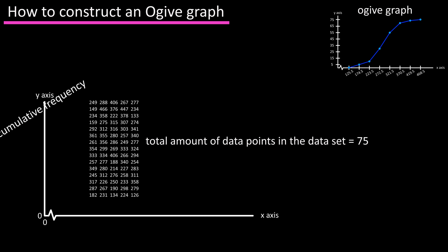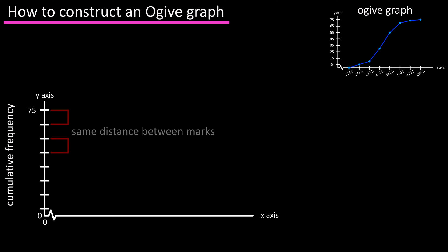So high up on the y or vertical axis we're going to mark 75. Now we're going to make seven more marks going down the y-axis. Make these so that they are the same distance from one another, or at least within reason if you're drawing this by hand.